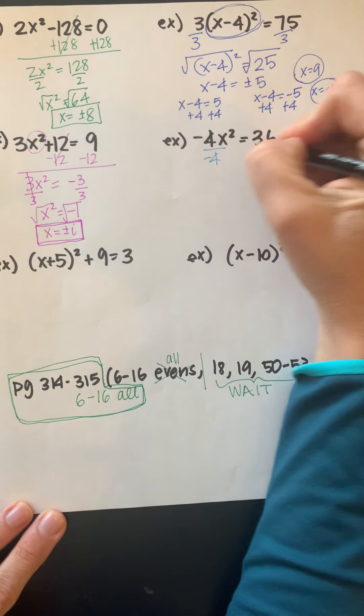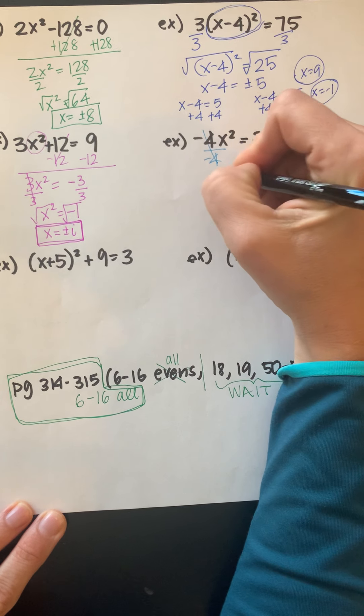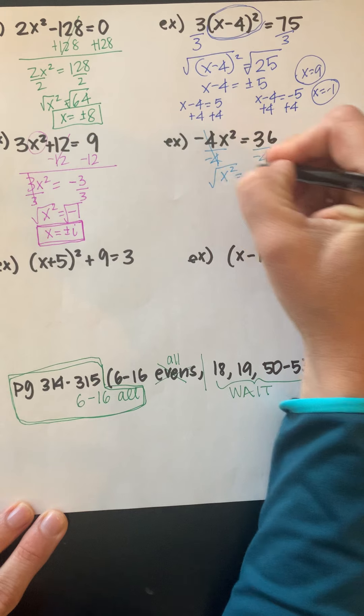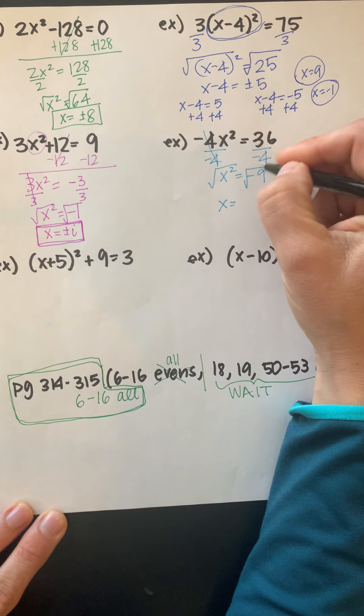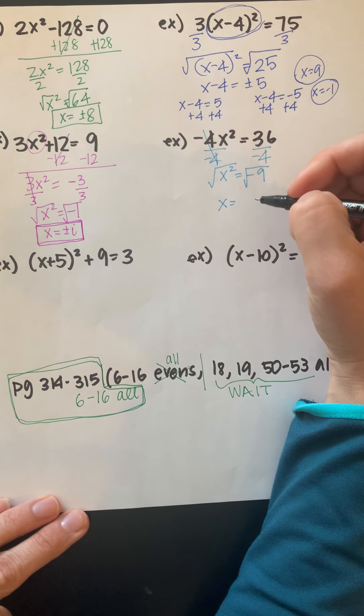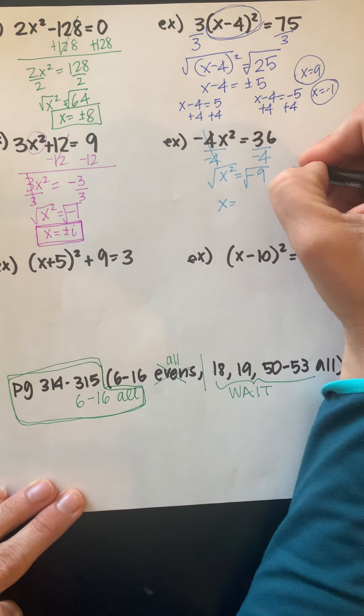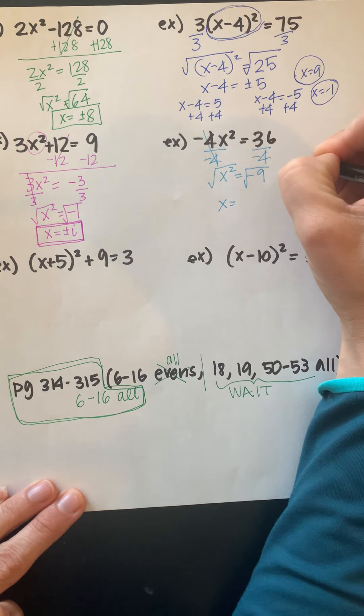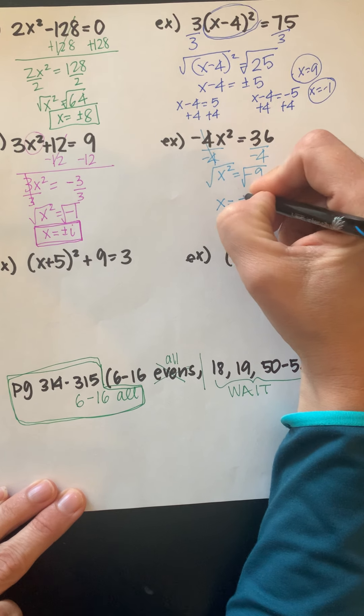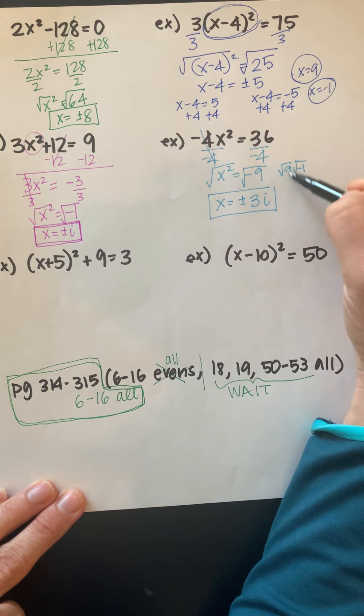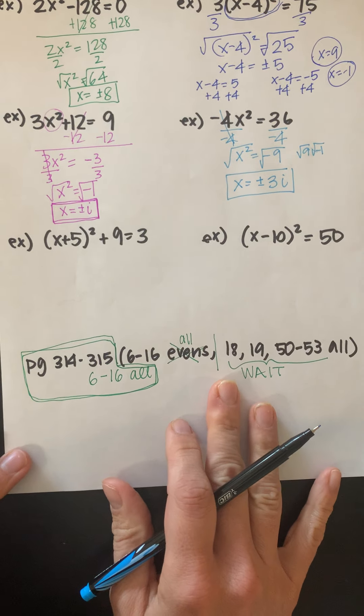Here we're going to divide by negative 4. x² equals negative 9. I go to take the square root of each side. Square root of negative 9. Now square root of negative 9, if you put that in your calculator, it'll give you an imaginary number. But really remember, we think of this as the square root of 9 times the square root of negative 1. So it's going to be plus or minus 3. But then also an i we include because of that negative 1 there.